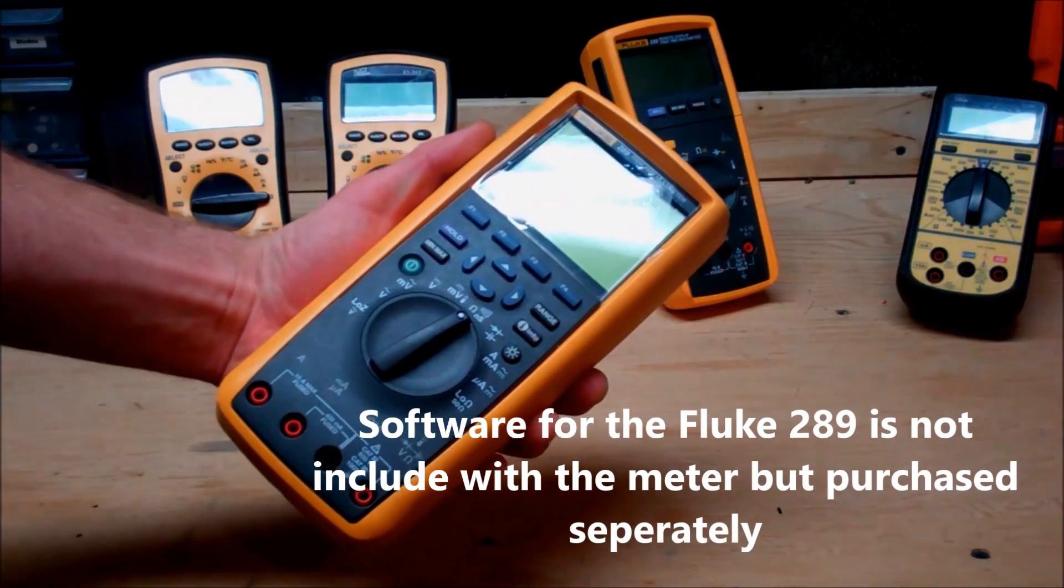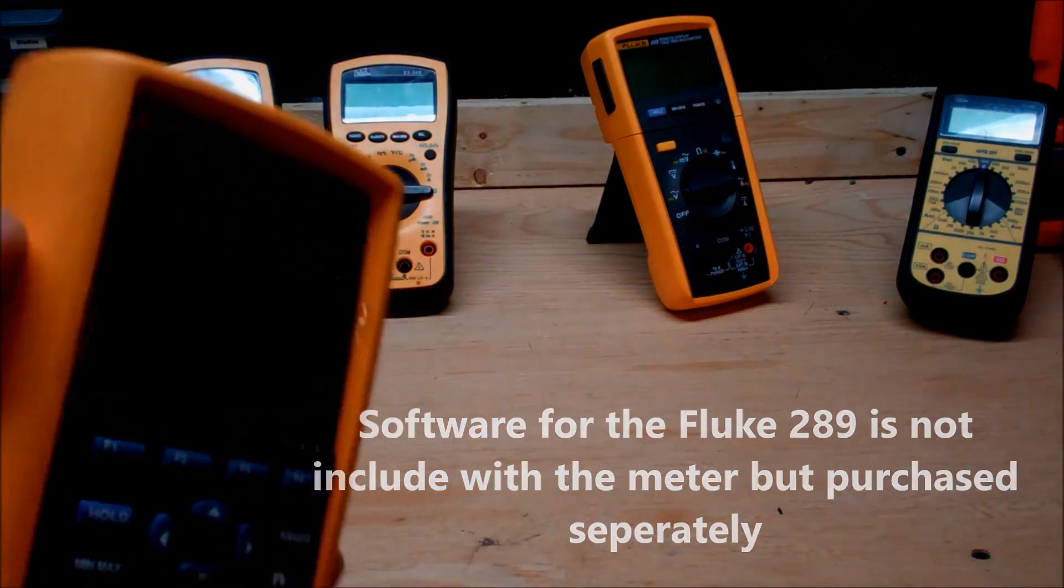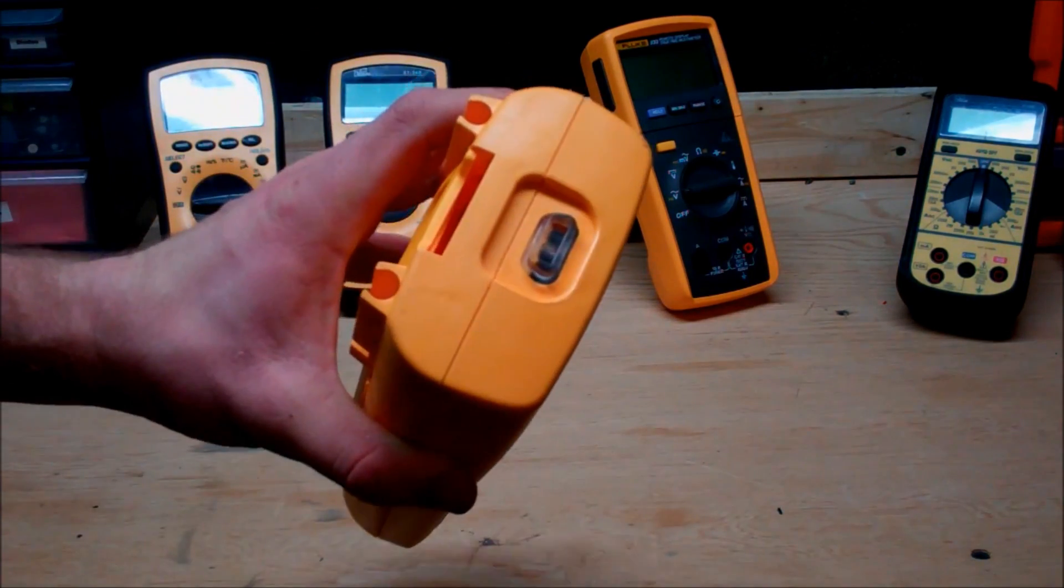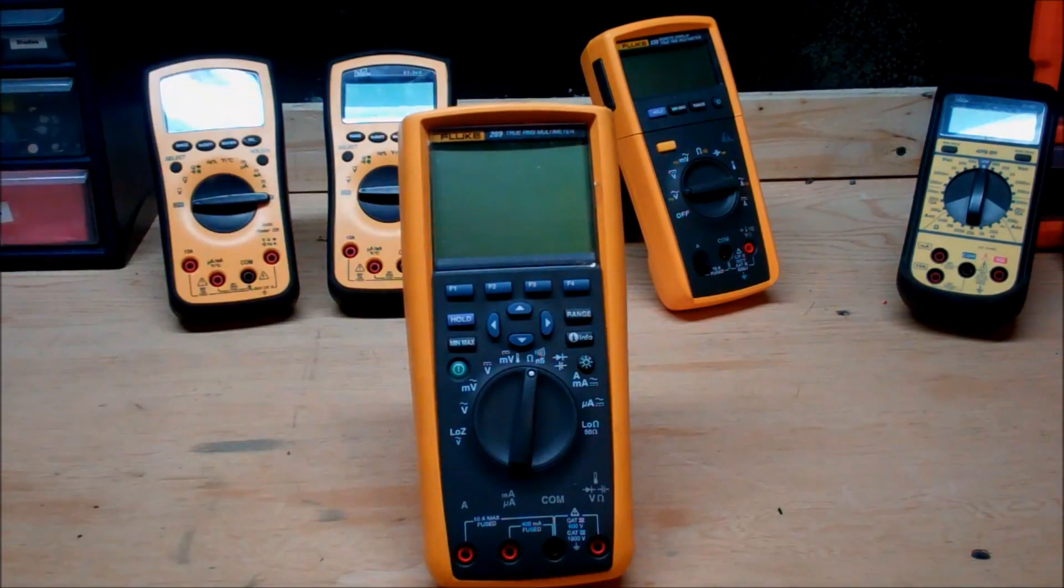The Fluke 289 is a data logging meter and it uses IR to communicate all its signals, infrared. What that means is you're not going to get contaminants into the multimeter through a USB port or something like that, so it's really well thought out because now this meter is going to be really enduring.